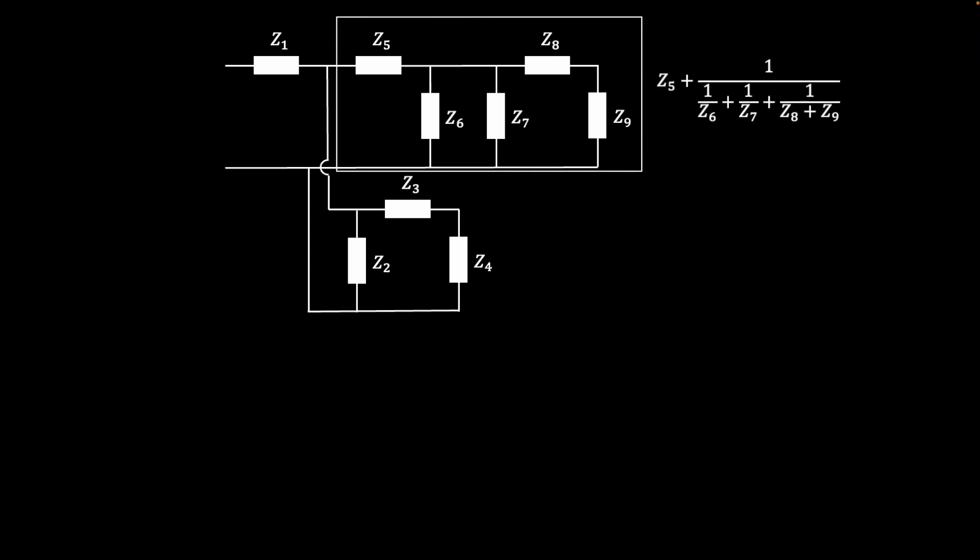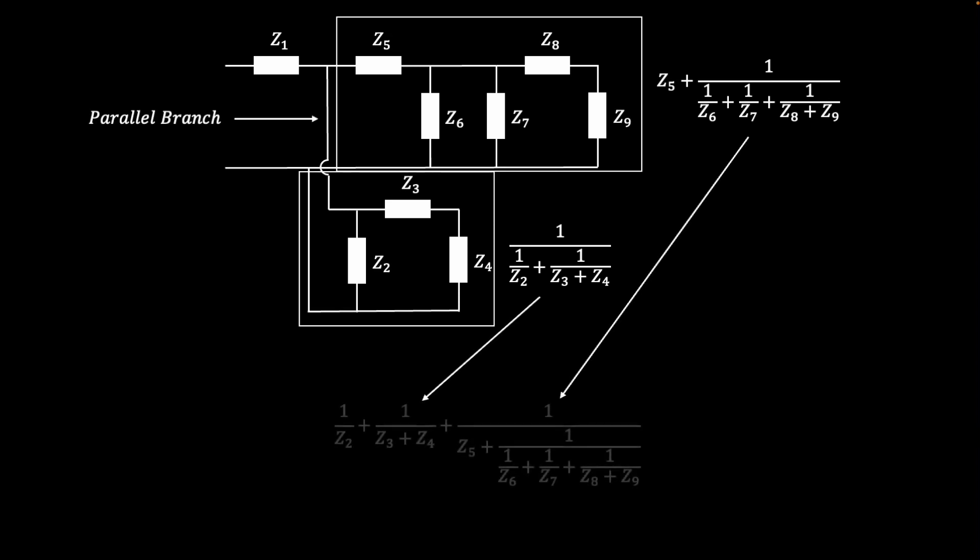First, the branch from z5 to z9 can be combined into series and parallel terms like before, and the same goes for the z2 to z4 terms. These two groups are connected in parallel to each other, so summing them requires adding their inverses. Finally, the z1 term is added in series. Up to this point, I've treated the z terms as general variables.